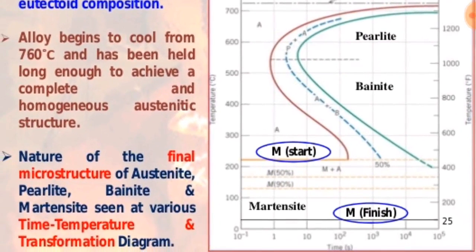Nature of the final microstructure of austenite, perlite, bainite, and martensite seen at various time-temperature transformation diagram conditions.